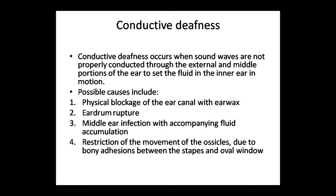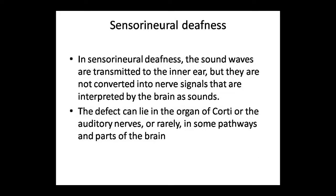In sensory neural deafness, sound waves cannot be transmitted to the inner ear and cannot be converted to nerve signals, so the brain is not able to interpret the sound. The defect is in the organ of Corti, in the auditory nerves, or in any part of the brain. This is called sensory neural deafness.